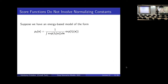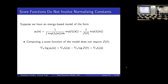So why is the score function interesting? One of the reasons is that it is independent of the normalizing constant or the partition function. Let's say we have an energy-based model P of X with this intractable partition function Z of theta. If I want to compute its score function, I don't need the partition function Z of theta. The score function is just the gradient of the log of the unnormalized distribution, which equals the gradient of f of X minus the gradient of log Z of theta. But because the partition function is not a function of X — it's a function of theta but not X — that gradient term is zero. So my score function is simply the gradient of the energy f of X.